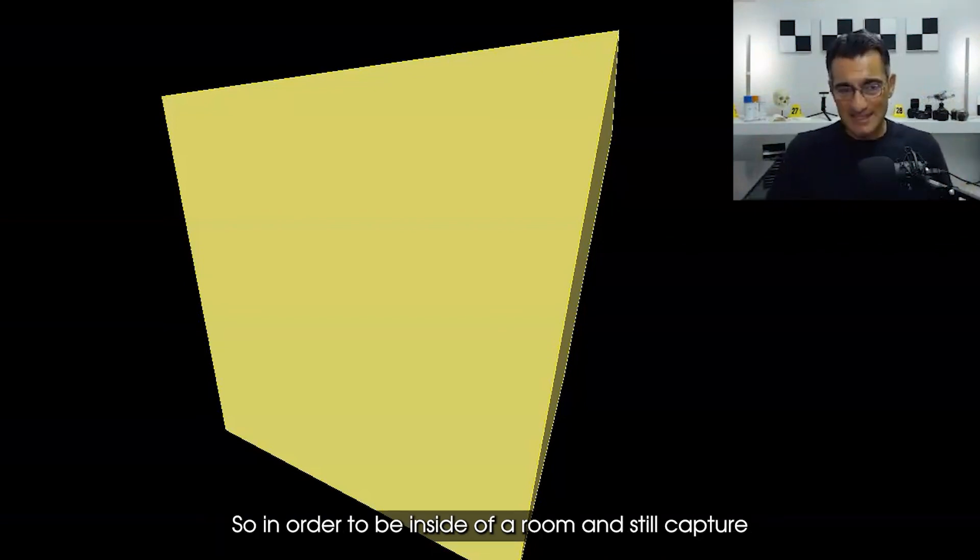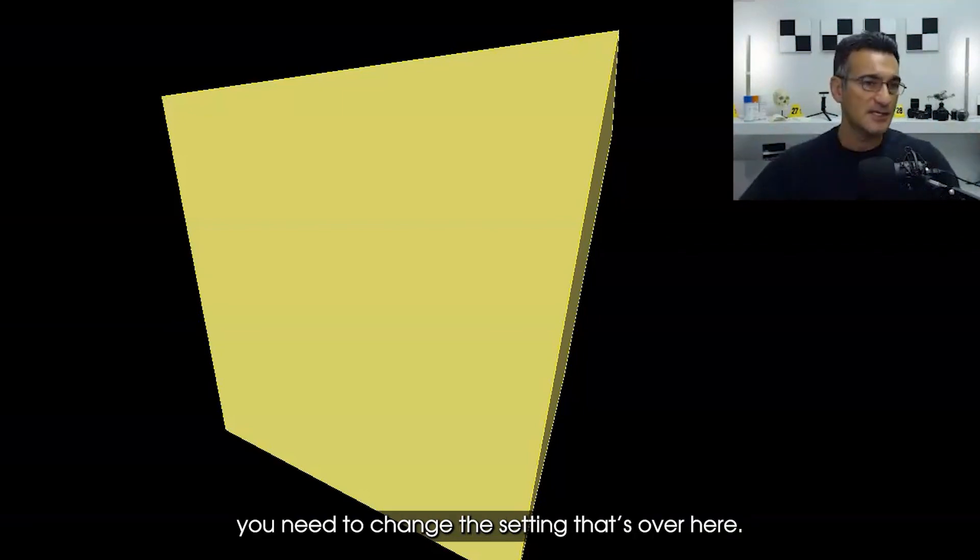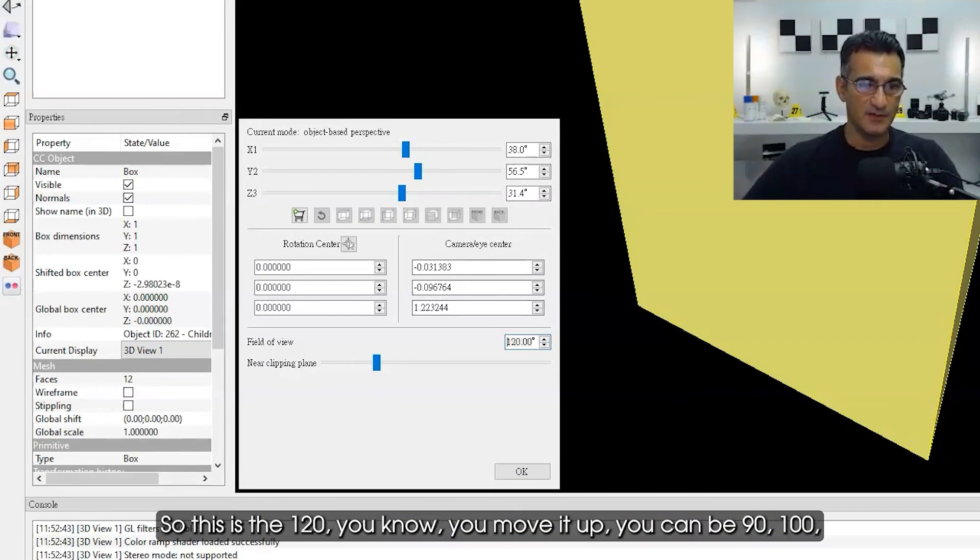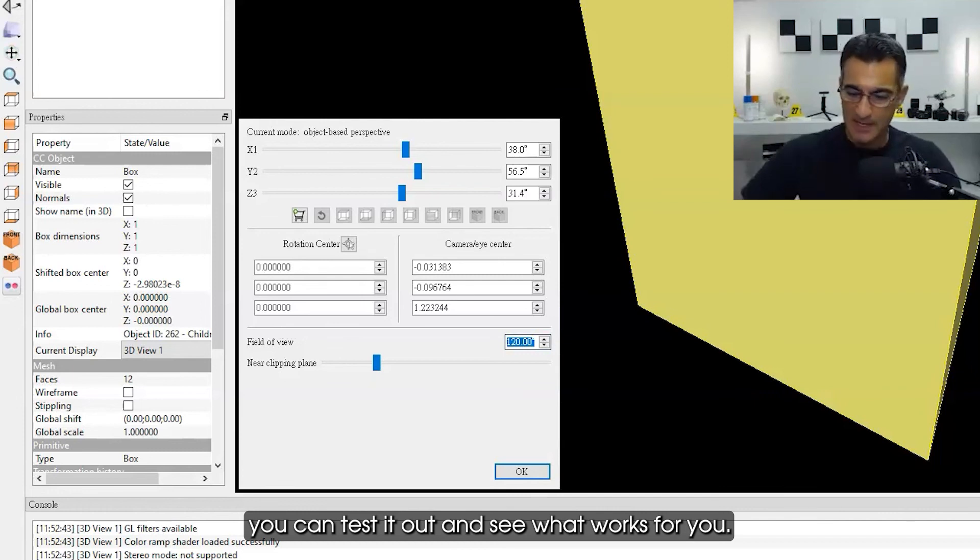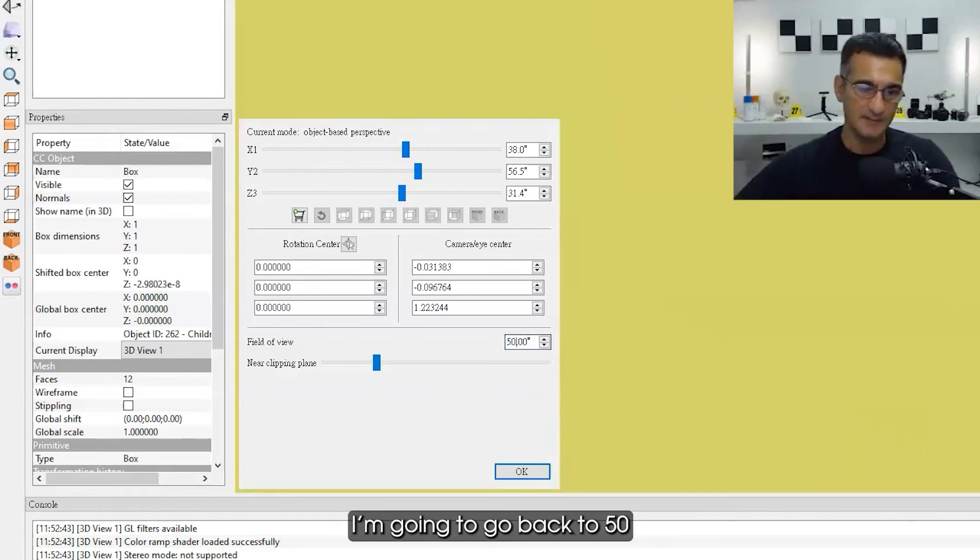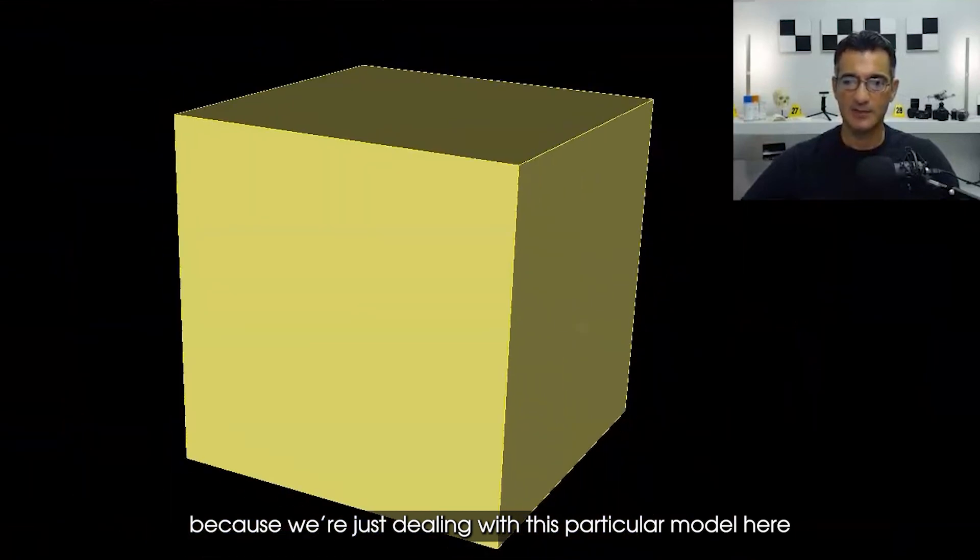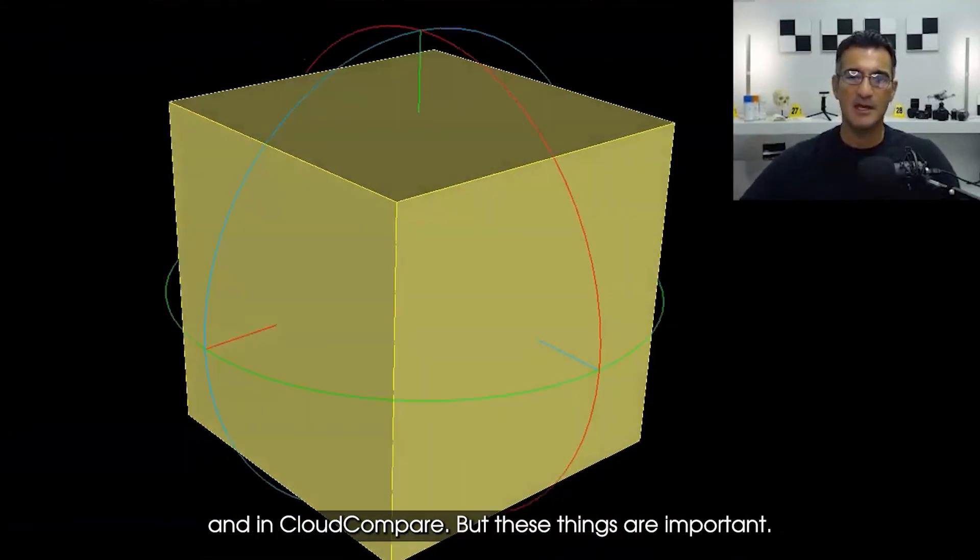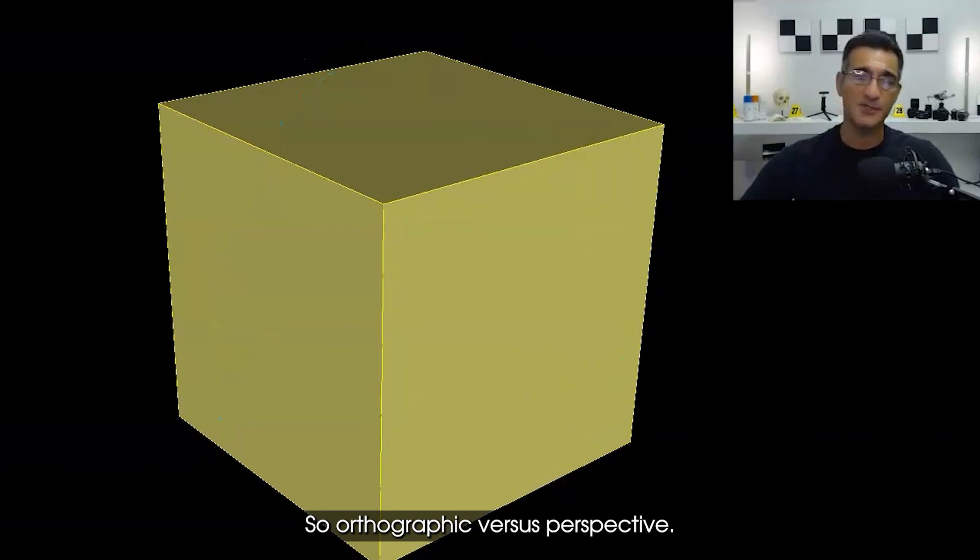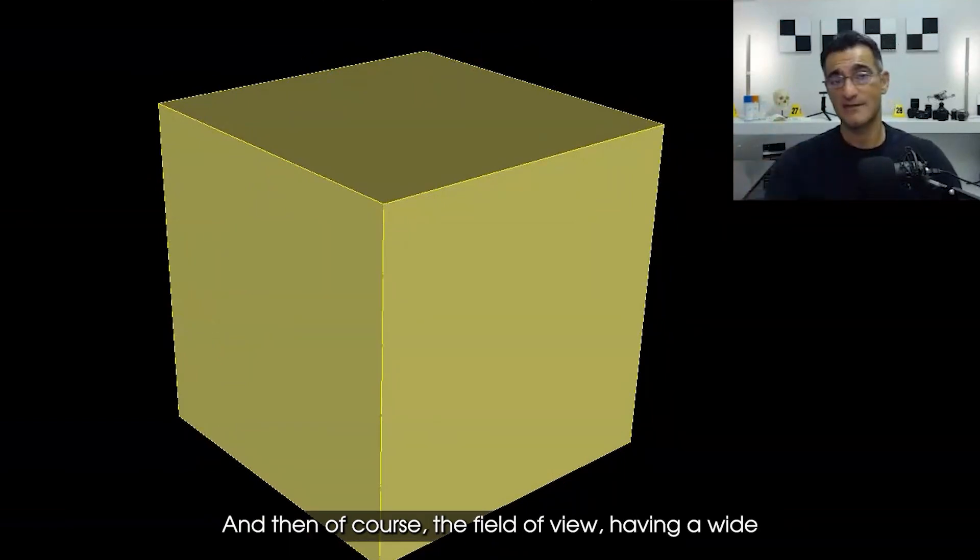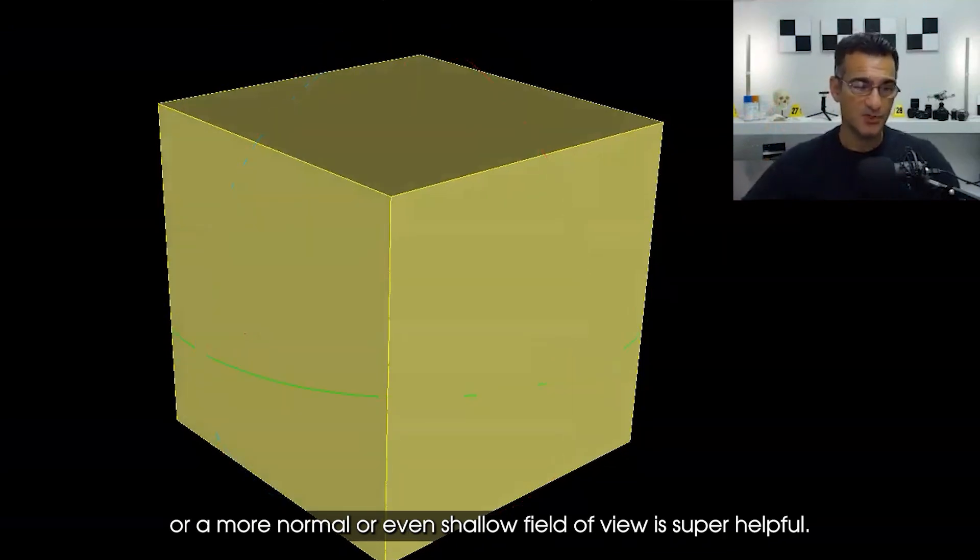So in order to be inside of a room and still capture or have a wide field of view, you need to change the setting that's over here. This is the 120 - you can move it up, you can be 90, 100, you can test it out and see what works for you. I'm going to go back to 50 because we're just dealing with this particular model here in CloudCompare. But these things are important - orthographic versus perspective and then of course the field of view, having a wide or a more normal or even shallow field of view is super helpful.